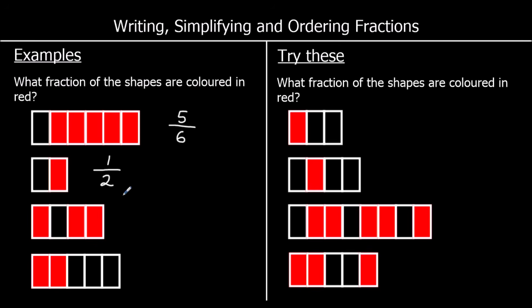For the next one, there are four parts. Three are coloured in red. So three out of four are red, and we write that as three over four or three quarters.